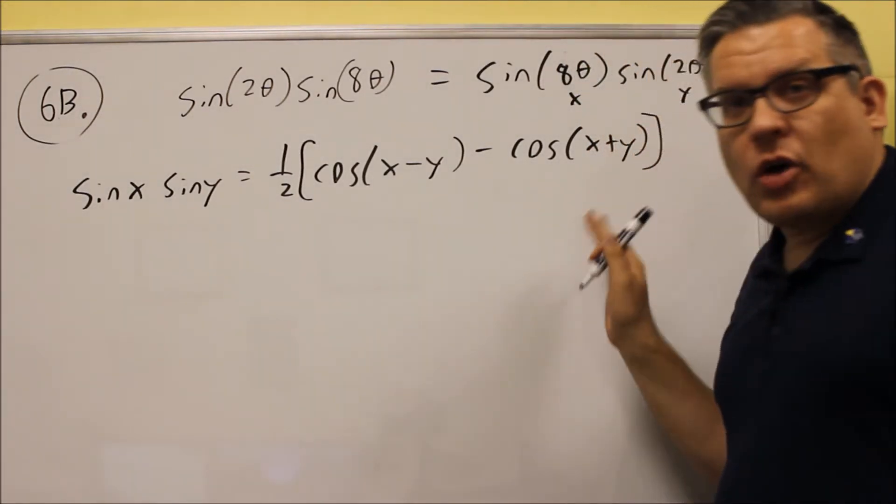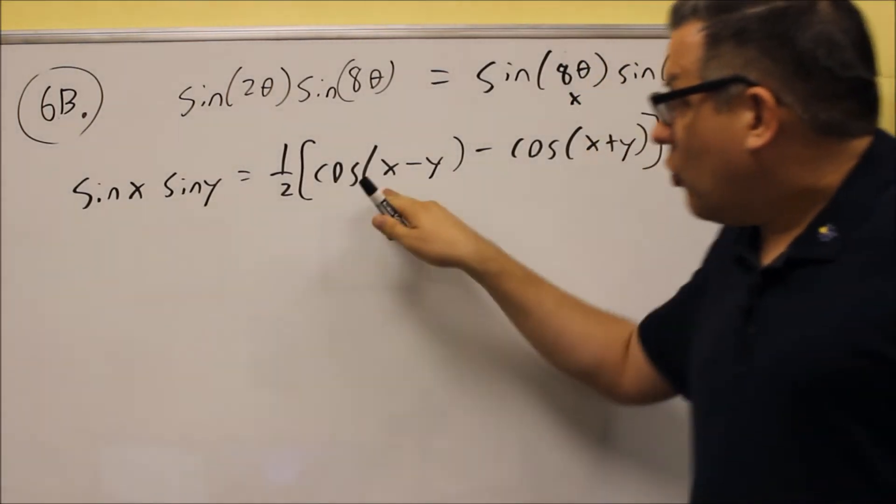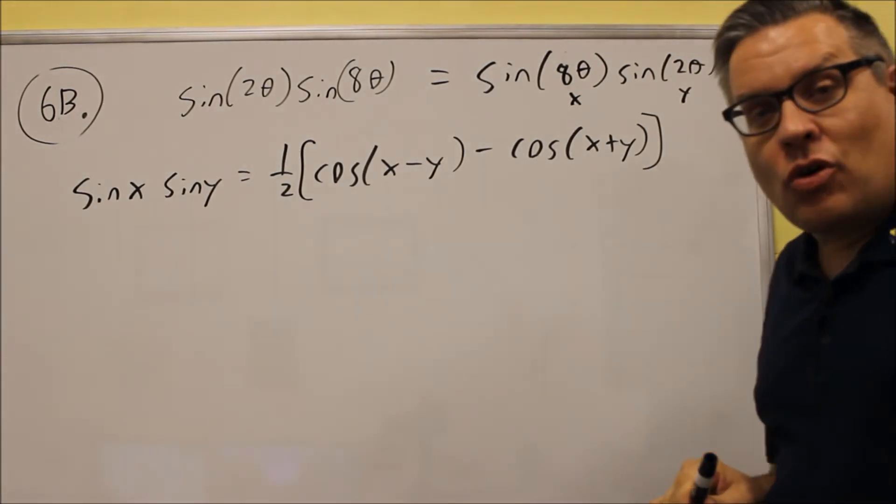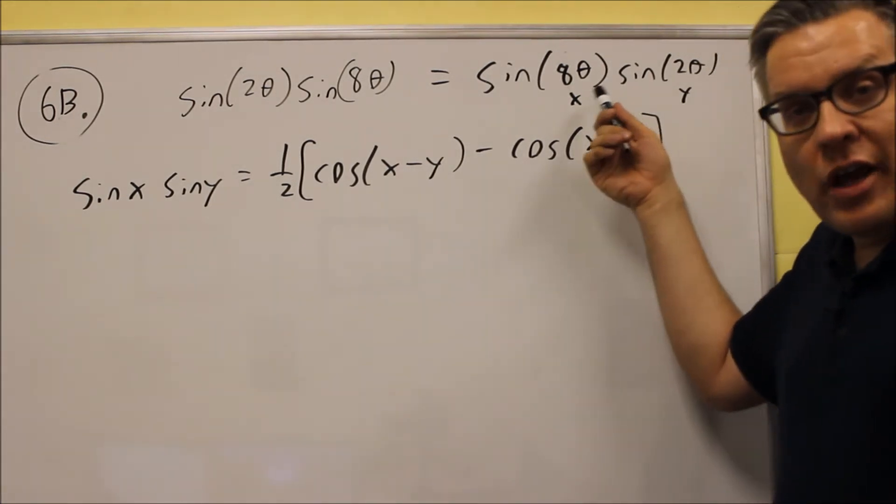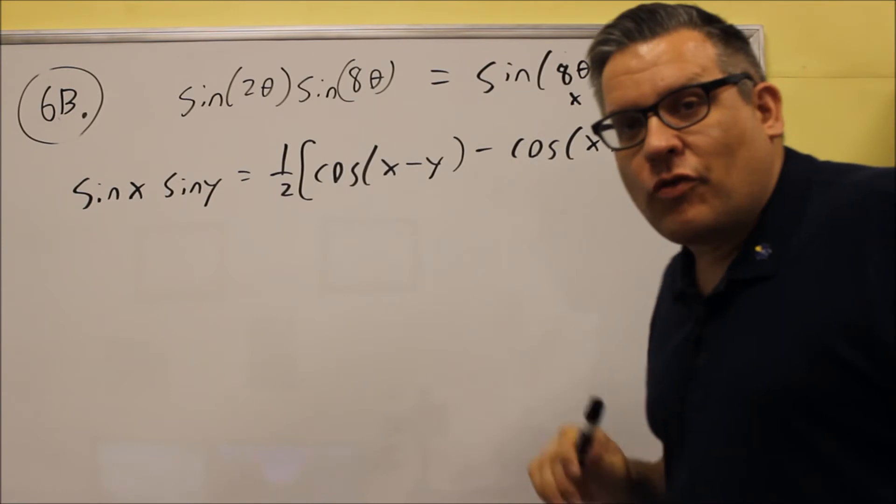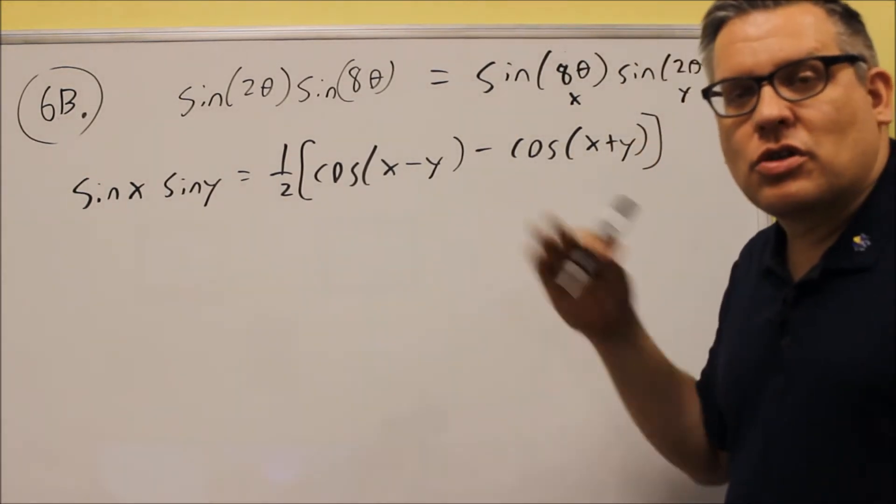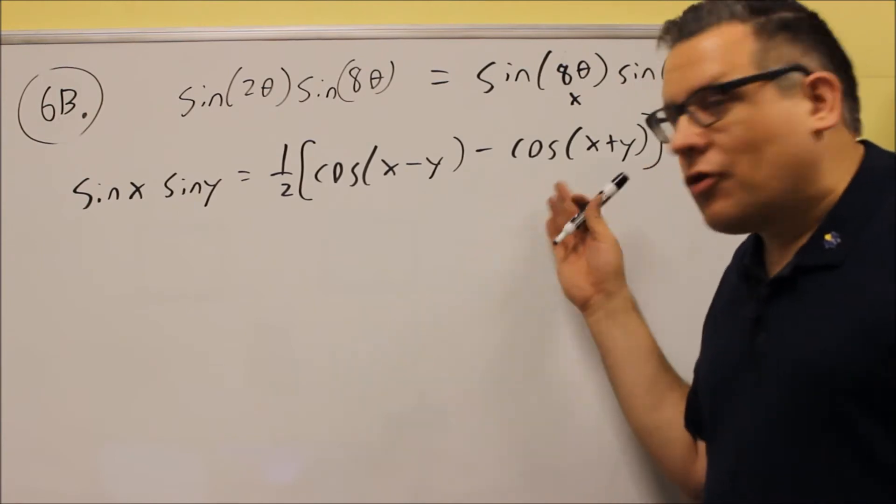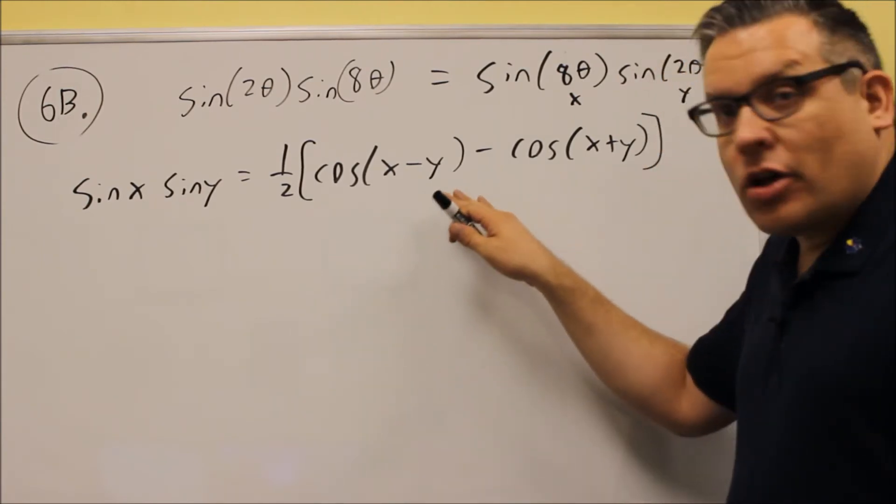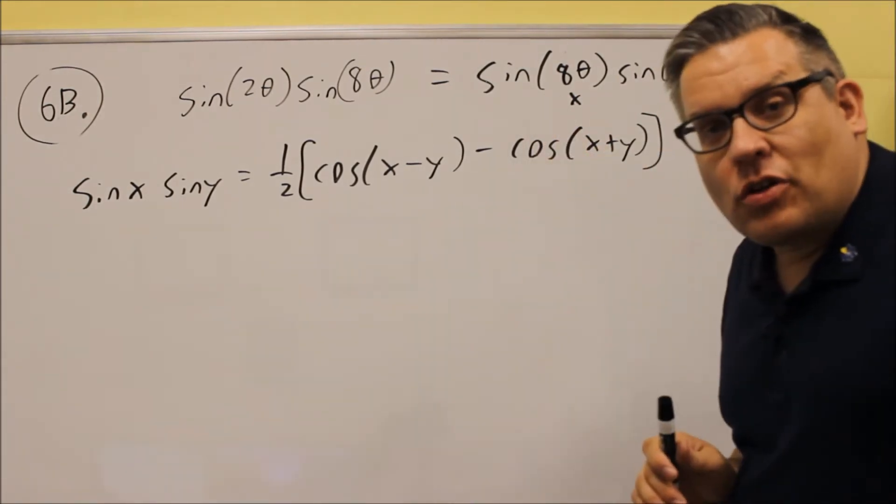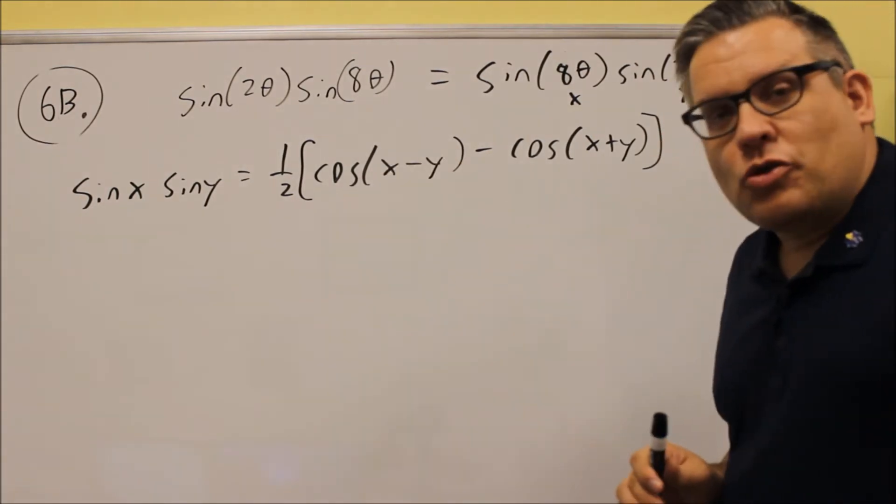So you notice that in the formula that we're going to use here, we end up with an x minus y. So the reason why you want to let the x be the larger one is because that way you can avoid negative angles. Because then if you have negative angles, then you have to use the even-odd properties. So if you don't want to use that, you can avoid it by just letting x be the larger one for something like this when you're multiplying.